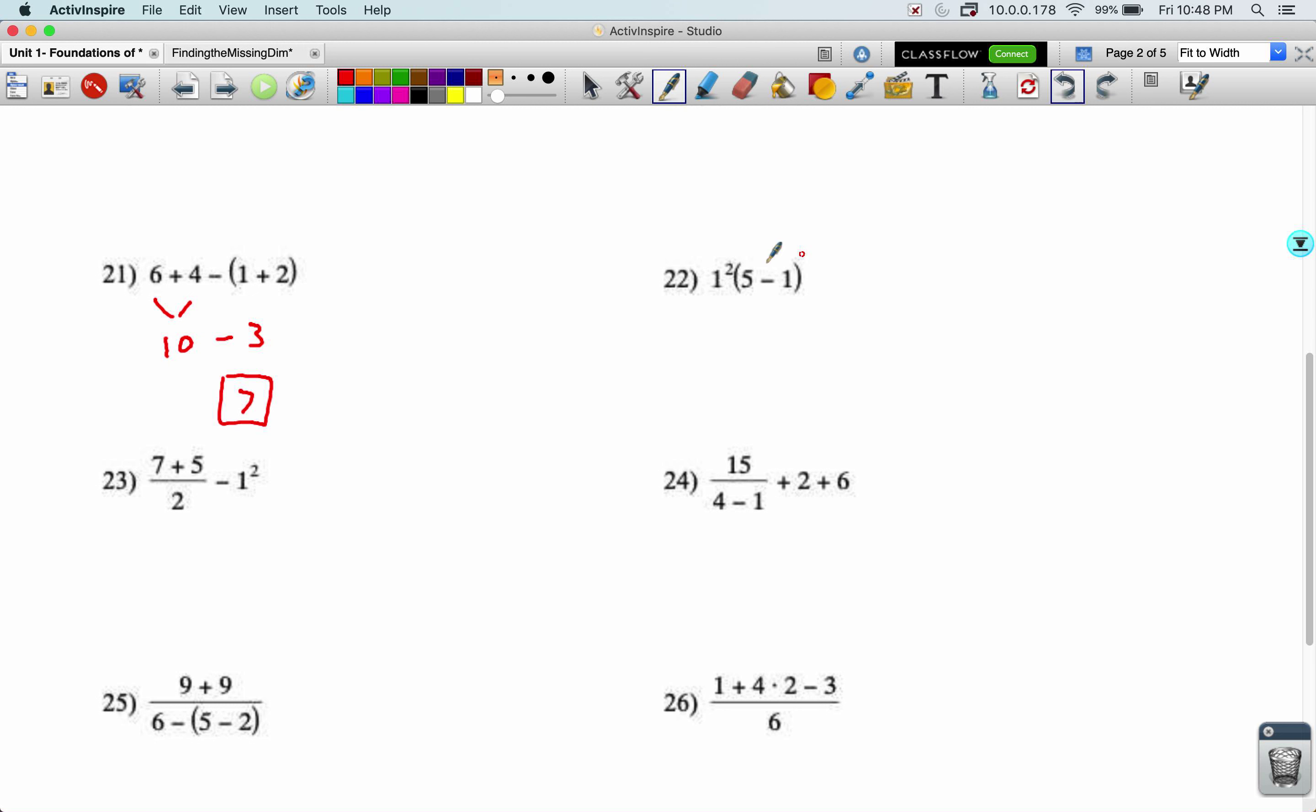One squared times five minus one. One squared is a one. The five minus one, we can do that next because that has nothing to do with this exponent. Well really it's we can do the exponent because it has nothing to do with the parentheses, which we have to do first. This is one times four, four.